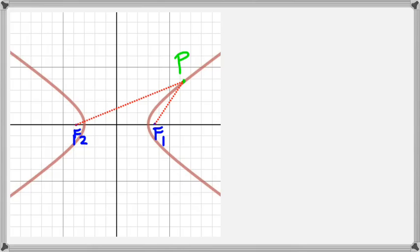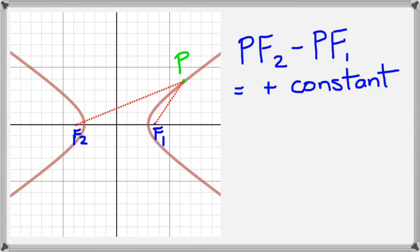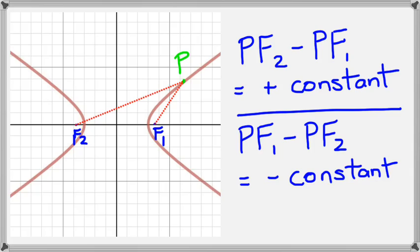So in other words, you'll be looking at something like this, where PF2 take away PF1 is a positive constant. Now you can also do it the other way, where you could do PF1 minus PF2, and you would actually get a negative constant. But with hyperbolas, it's looking at the differences rather than the sum of the distances.